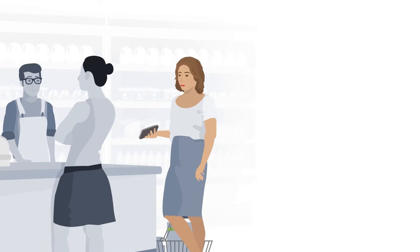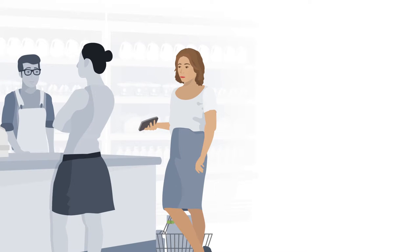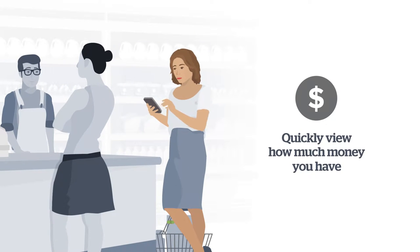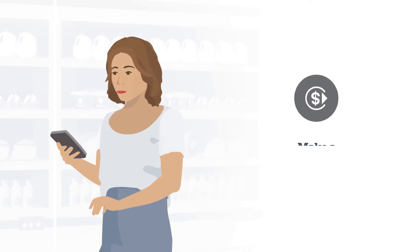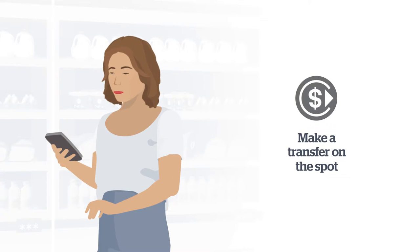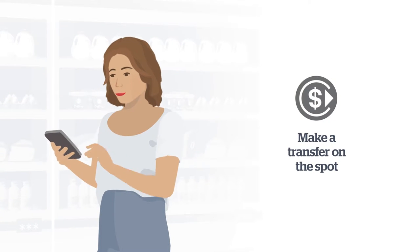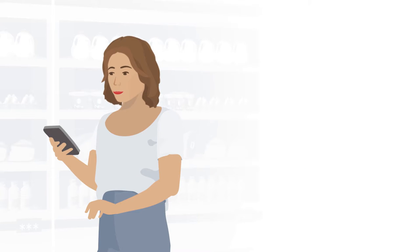QuickZone is great for when you quickly need to know how much money you have, say, in a queue at the supermarket checkout. And if you need some extra funds, you can perform a quick transfer between your accounts on the spot.